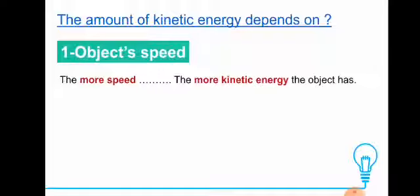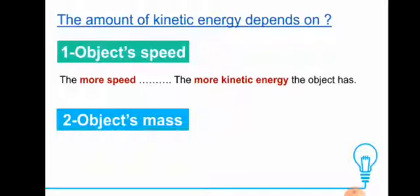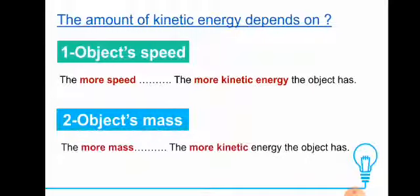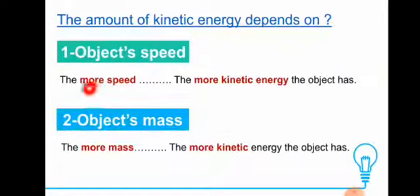When an object moves with high speed, it will have more kinetic energy. Also, if the object has more mass — for example, when more people are riding a swing — it will have more kinetic energy. So more speed means more kinetic energy, and more mass means more kinetic energy.